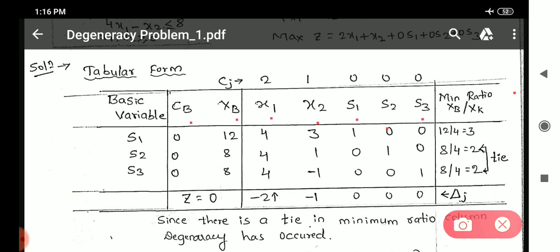We have considered three basic variables s1, s2 and s3, and then we calculate value of z, z equals 0. And we calculate delta j values as well: minus 2, minus 1, 0, 0, 0. Among all these delta j values, minus 2 is the most negative, therefore we consider this column as the key column.